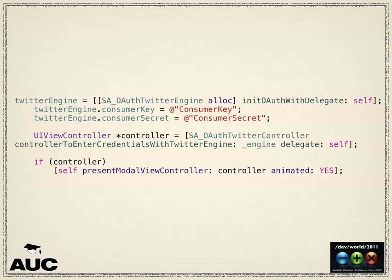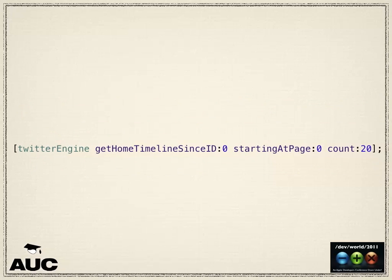You start off by creating a Twitter engine, similar to the Facebook object. You give it your consumer key and consumer secret — what you got when you created your app on the Twitter dev site. You tell it to go away and authorize itself, it brings up a modal window, gets the person to log in to Twitter, and returns yes or no whether they authorized your app. Because there are only a limited number of API calls, they've pretty much got all the different types of calls with various parameters built into the framework.